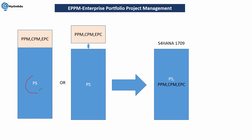For example, if you had an ECC server with project system and wanted to implement PPM, CPM, or EPC, there was a provision to keep these individual modules as an add-on on the same ECC system. To communicate data between PPM, CPM, and EPC with PS, RFC was used. Similarly, when keeping a separate server for these modules, RFC — remote function call — was required. Before S4 HANA 1709, PPM, CPM, and EPC also had individual licensing.